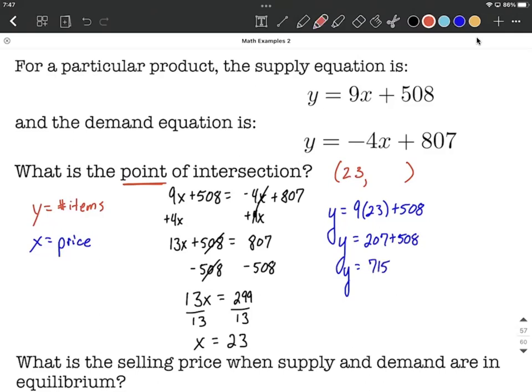The alternative to this is we could have used the demand function instead. We could have said y is going to equal negative 4 times 23 was our x value, plus 807. Again, we'll multiply first, negative 92 plus 807. Our y value also works out to be 715.